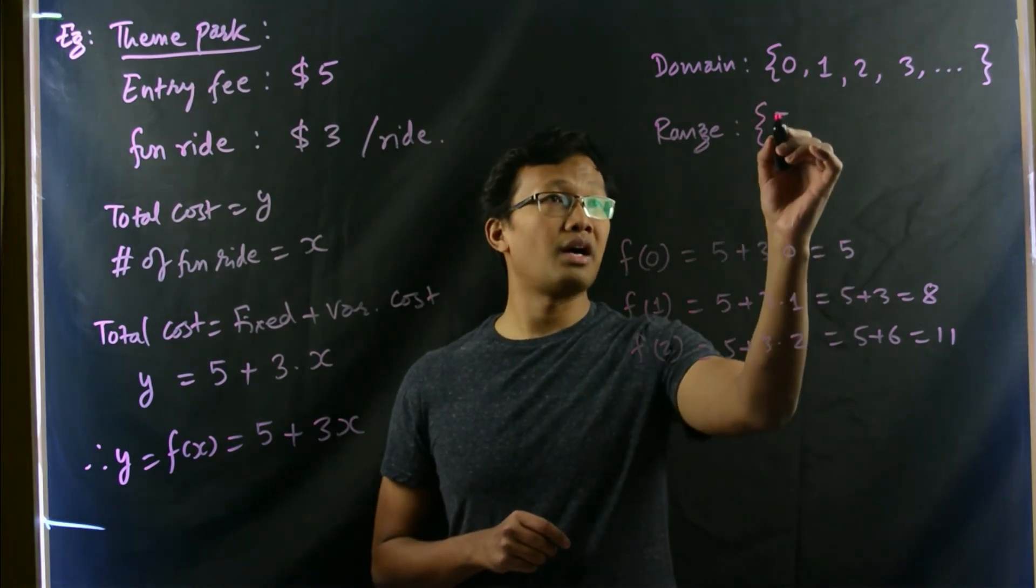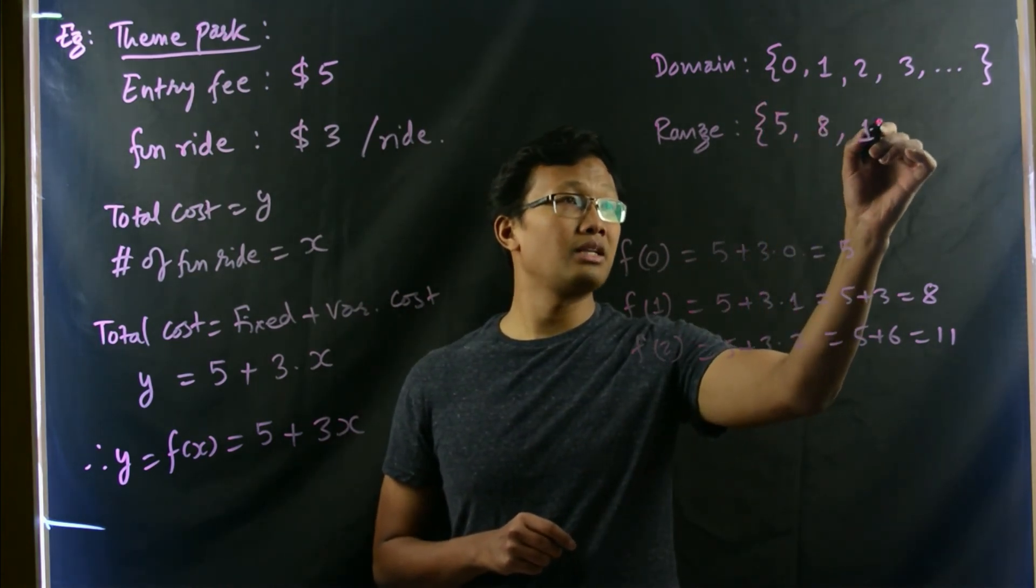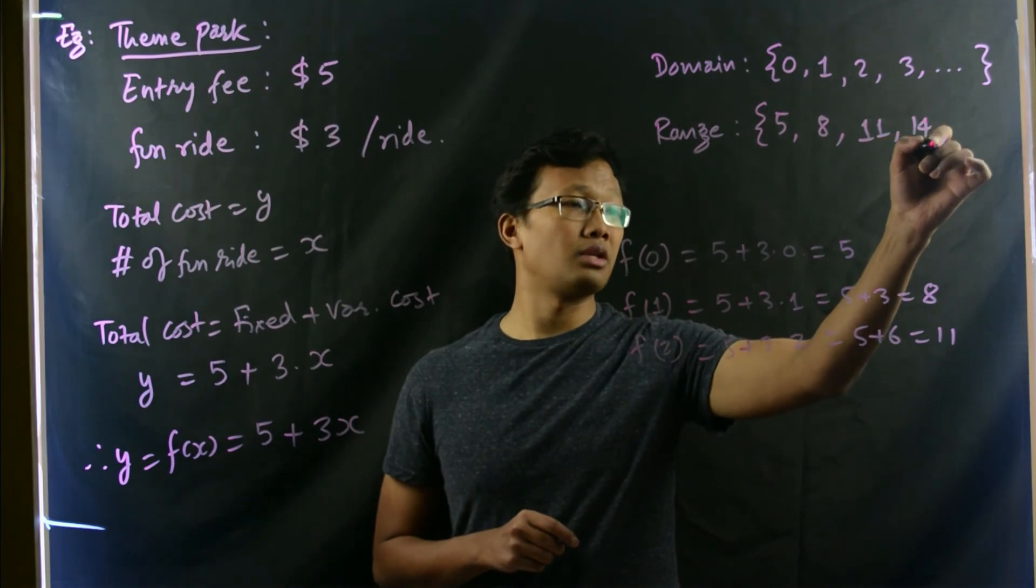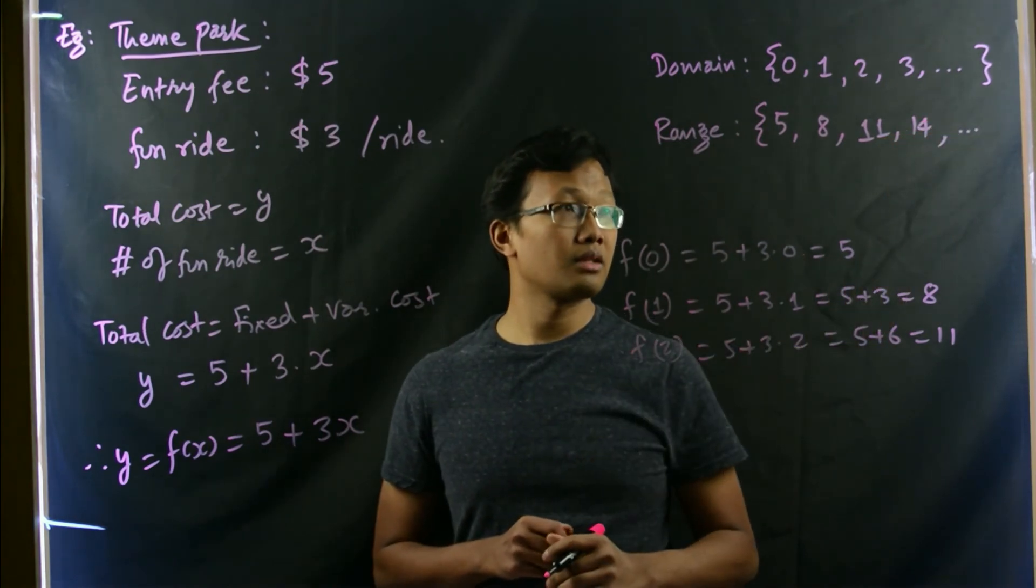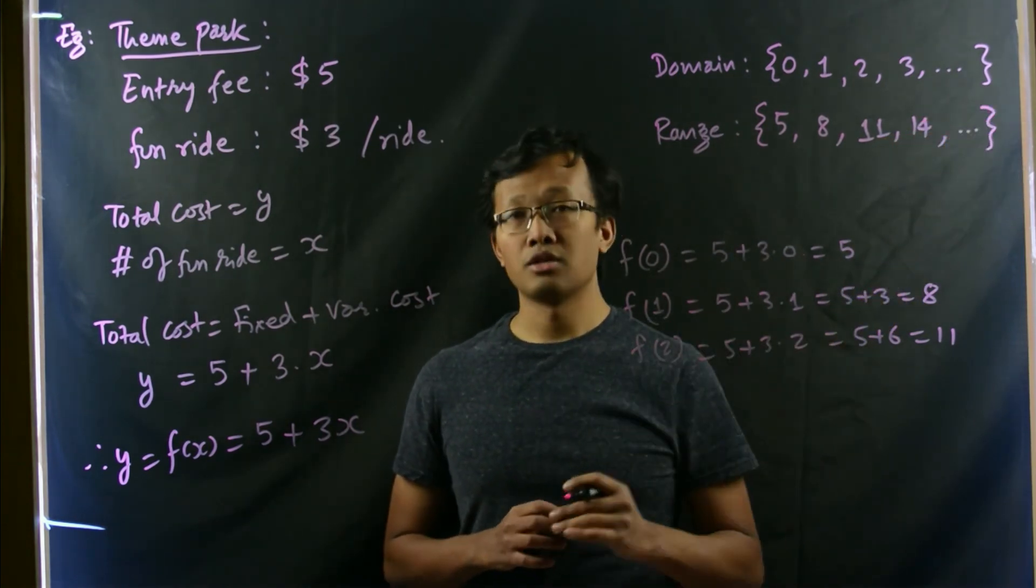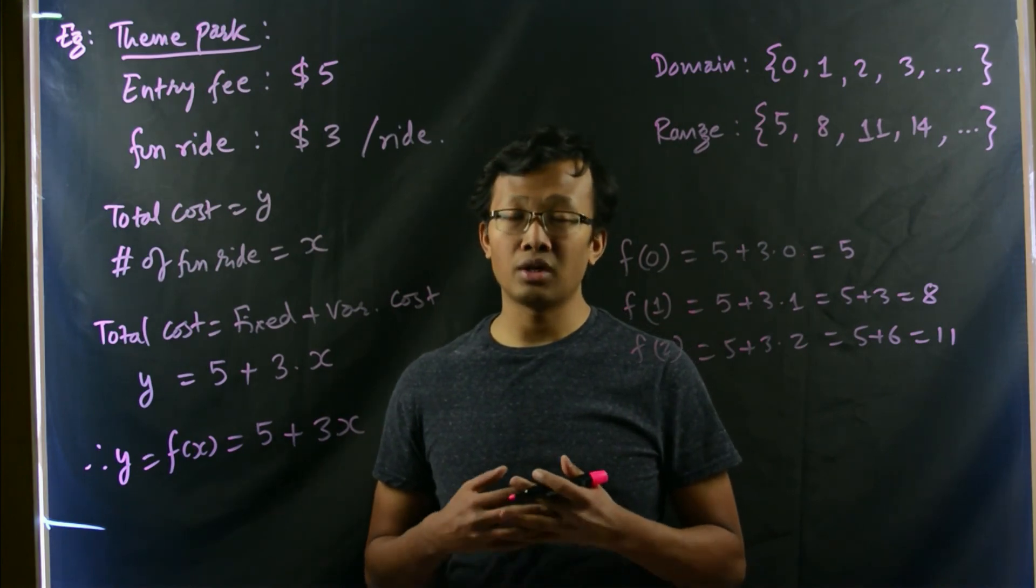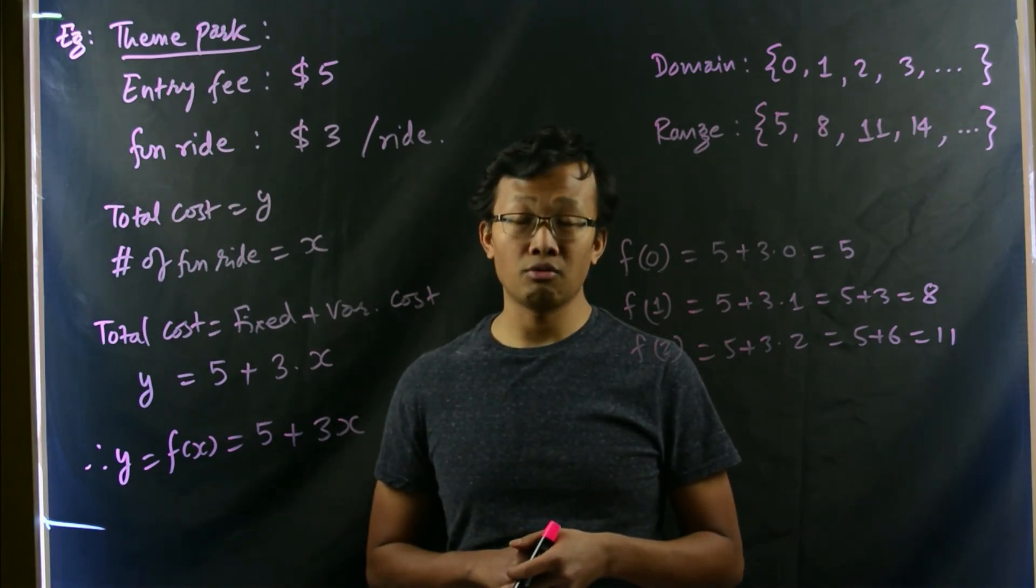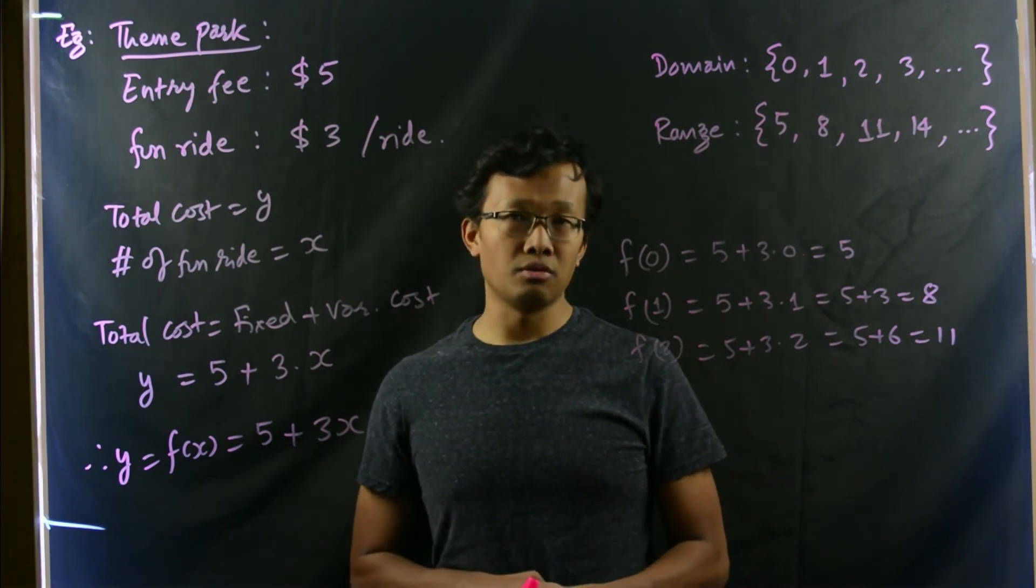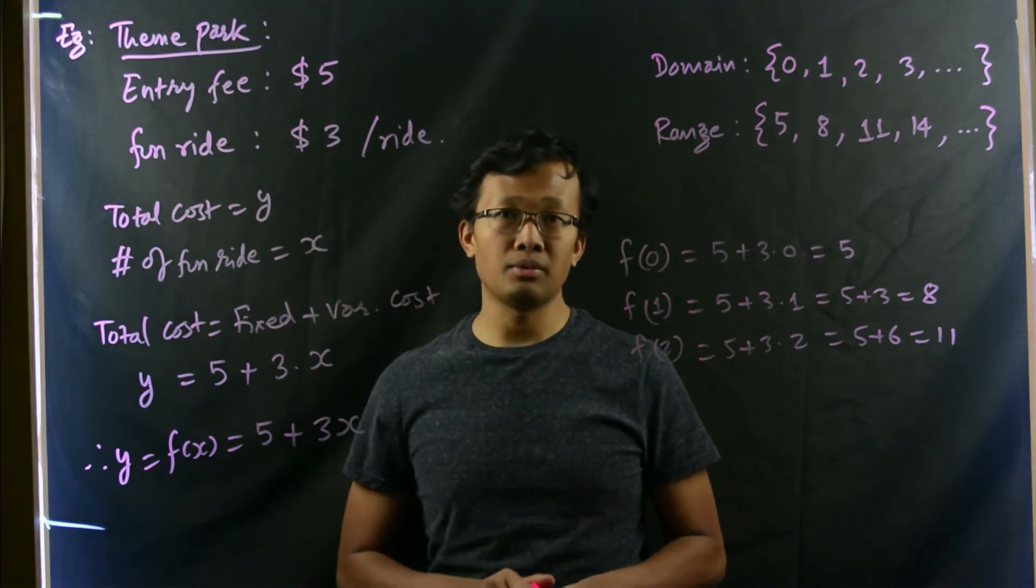Our range would be 5, 8, 11, 14, and so on. So, this is the range. We must be careful about what kinds of numbers should we choose and what kind of numbers will we be able to choose. That's why domain is quite important.